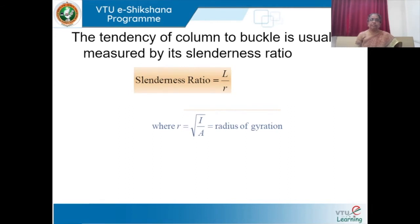The tendency of a column to buckle is usually measured by its slenderness ratio. Slenderness ratio is the effective length divided by R, the radius of gyration, where R = √(I/A). Here I is the moment of inertia and A is the cross-sectional area.